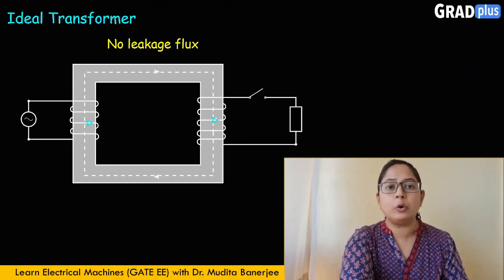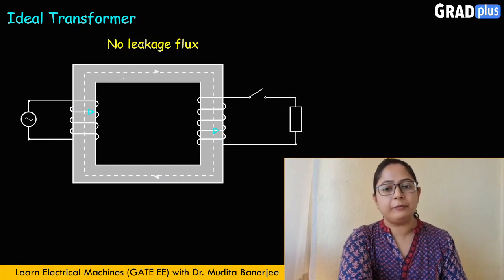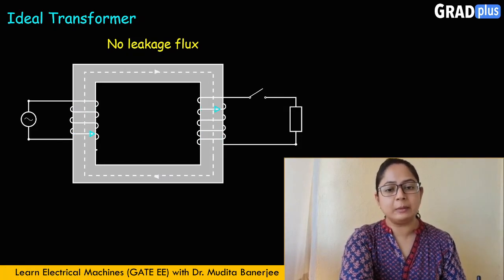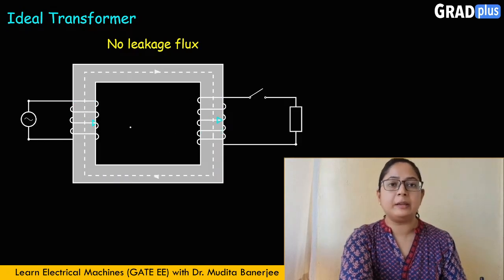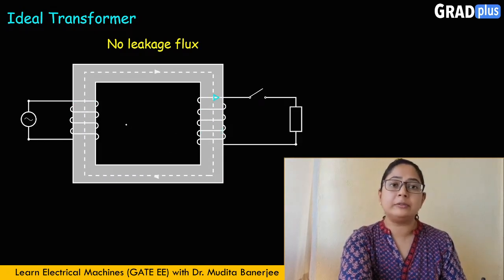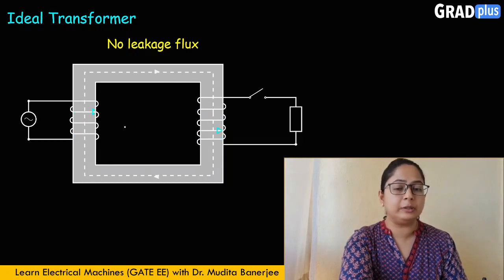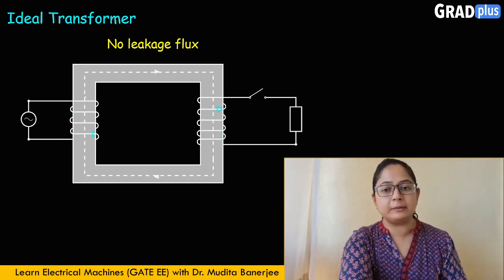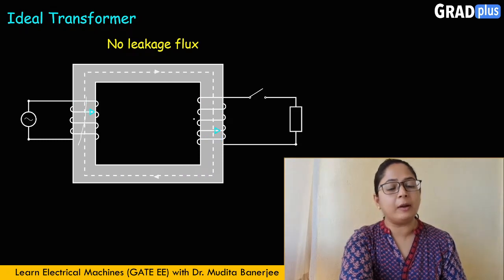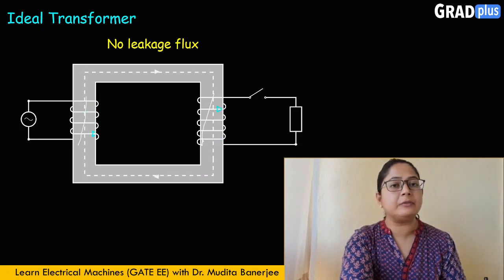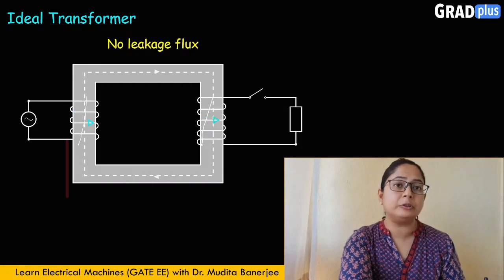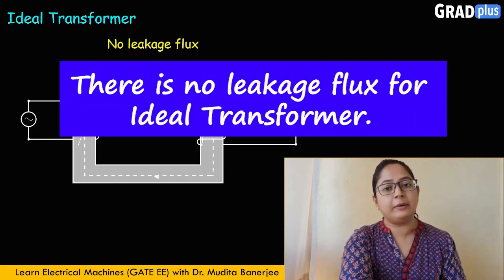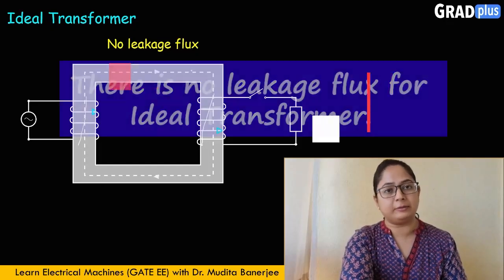The second difference is there is no leakage flux in the core. The flux which is set up in the core is confined in the core only; it does not complete its path through the air. So whatever flux links the primary winding, the total flux also links the secondary winding. There is no flux completing its path through the air, so there is no leakage flux.